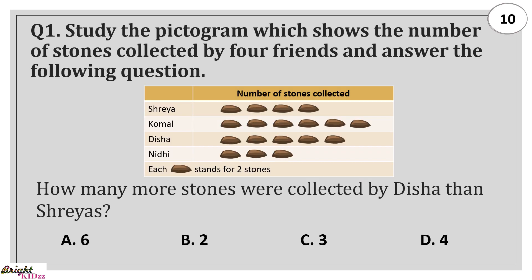Section 2: Mathematical Reasoning. Study the pictogram which shows the number of stones collected by 4 friends and answer the following questions. How many more stones were collected by Disha than Shreya? Answer: 2. Since there is one stone extra in the pictogram and each stone stands for 2 stones.